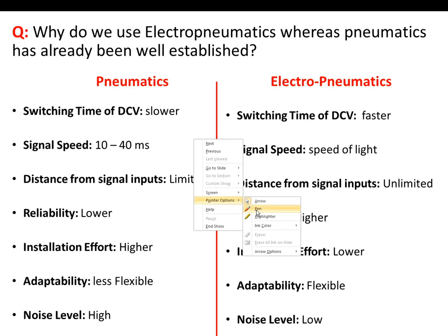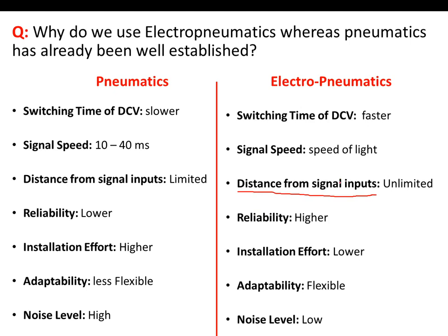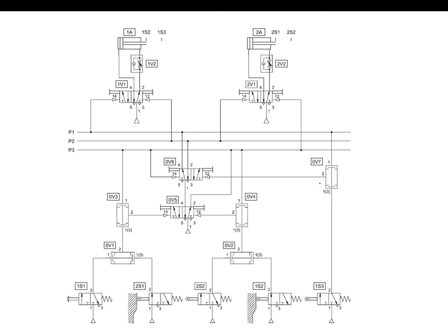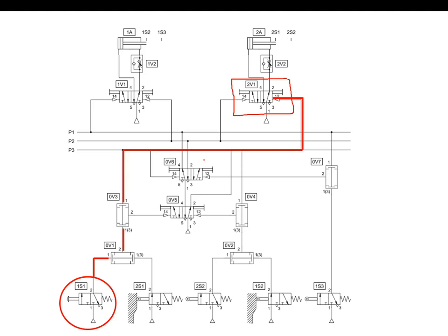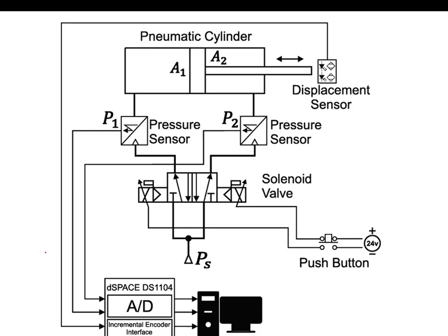Thirdly, and this one is going to be highlighted more specifically, the distance from the signal input. In a pneumatic circuit, the signal has to travel all the way from the signal input through the pipes and tubes to our final control element. As the input button gets farther, the distance becomes longer and longer, incurring losses in terms of pressure drop. Whereas in an electro-pneumatic system, we only have electric current flowing through wires, so we overcome this shortcoming.